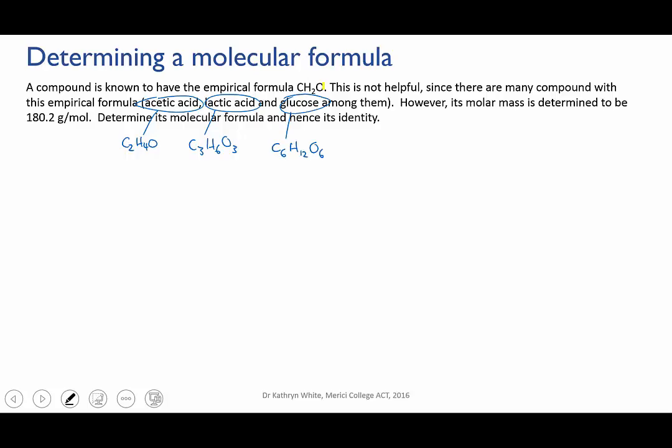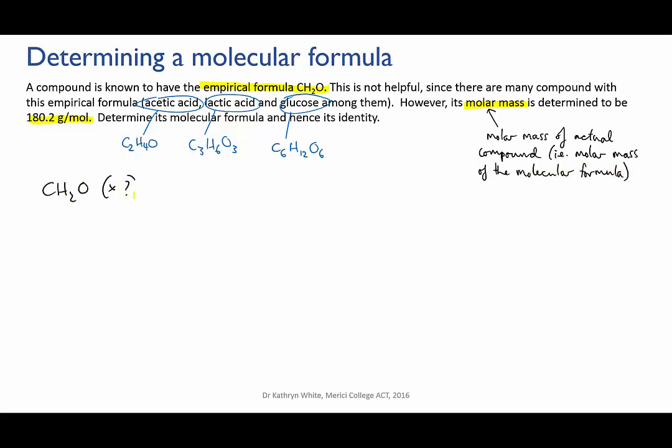Okay, so first write down what you know. We know that the empirical formula is CH2O and we know that the molar mass of the molecular formula, the true formula, is 180.2 grams per mole.